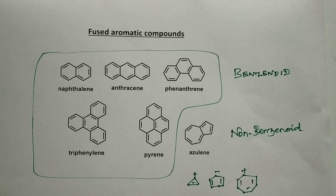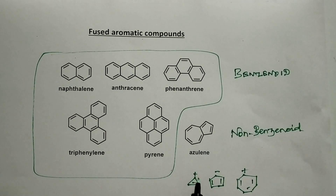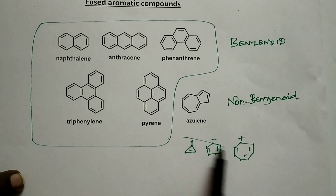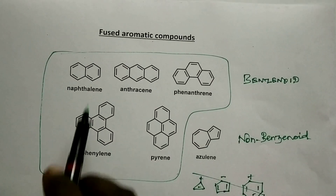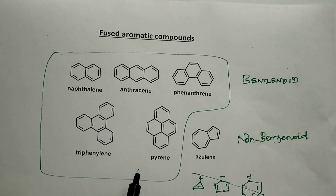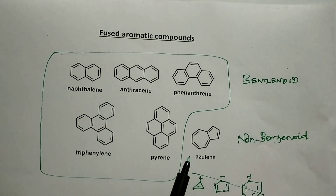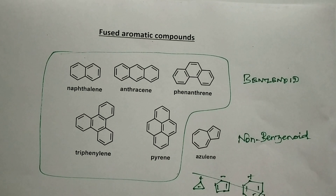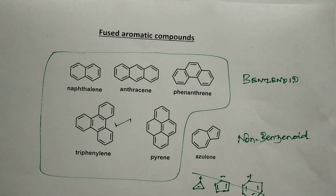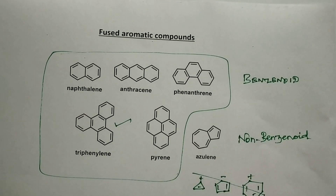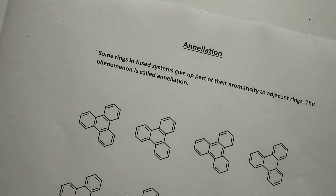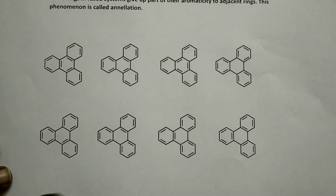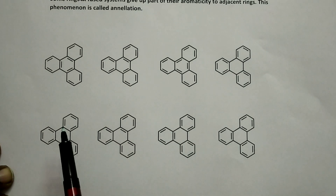In this topic of annulation, we are not concerned with those compounds. We are concerned with only fused aromatic systems. This annulation is observed in a few fused aromatic systems. Take, for example, triphenylene. You can write these many canonical forms — resonance structures.